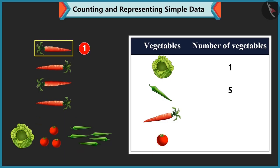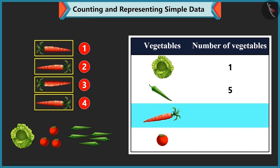Carrots are 1, 2, 3 and 4 over here. So, we write 4 against carrot.